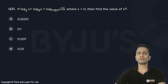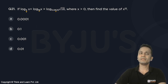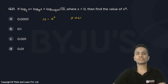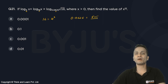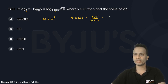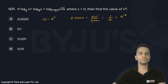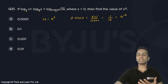On both sides we'll try to make the base the same. For the first term on the left-hand side, the base is 4 — we'll keep it as it is. 16 can be written as 4 squared, and 0.0625 can be written as 625 upon 10,000, which simplifies to 1/16, which is 4 raised to the power minus 2.